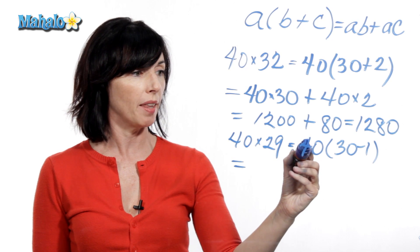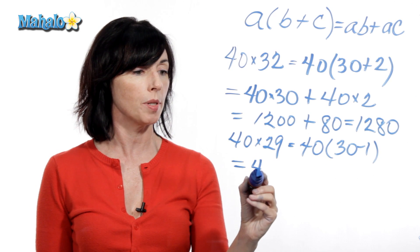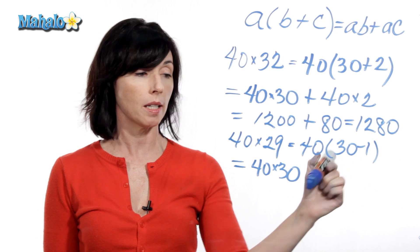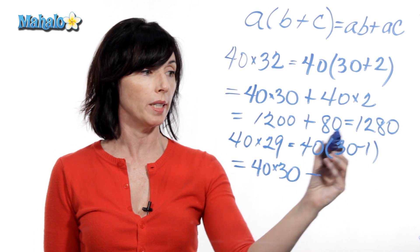I'm going to multiply this times this, so 40 times 30, minus, because I have a minus sign here, I'm going to keep that, minus 40 times 1.